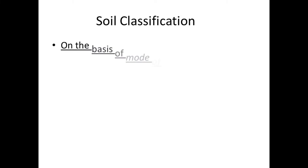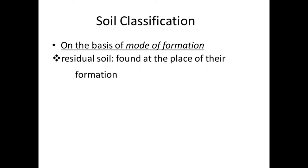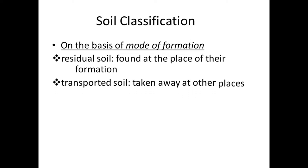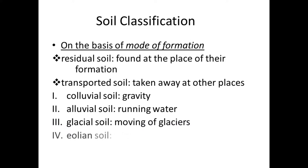Soil can be classified first on the basis of its mode of formation: residual soil, which is found at the place of its formation (weathered soil), and transported soil, where soil particles are carried away by agents. For example, colluvial soil is transported by gravity; alluvial soil by running water; glacial soil by moving glaciers; and aeolian soil when wind is responsible for transportation.